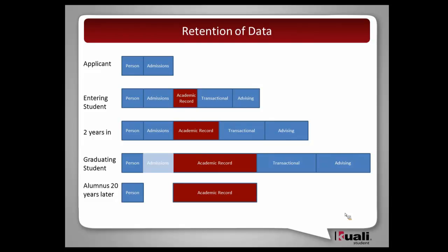Now let's jump forward — alumnus 20 years later. What information are you actually maintaining about that student? We still have their person information because we need to identify them. But admissions data? Gone. At the University of Maryland, our legal retention schedule destroys admissions data seven years after the student leaves — it's deleted, gone. Academic record? We've got everything: all the experiences, grades, degrees. But in terms of all registration transactions — seven years after you left, every registration form you filed is destroyed, all transactional logs deleted. And the advising file? Advising units destroy those seven years after the student leaves. It's gone, destroyed. What you have left is essentially the academic record and some PI data.